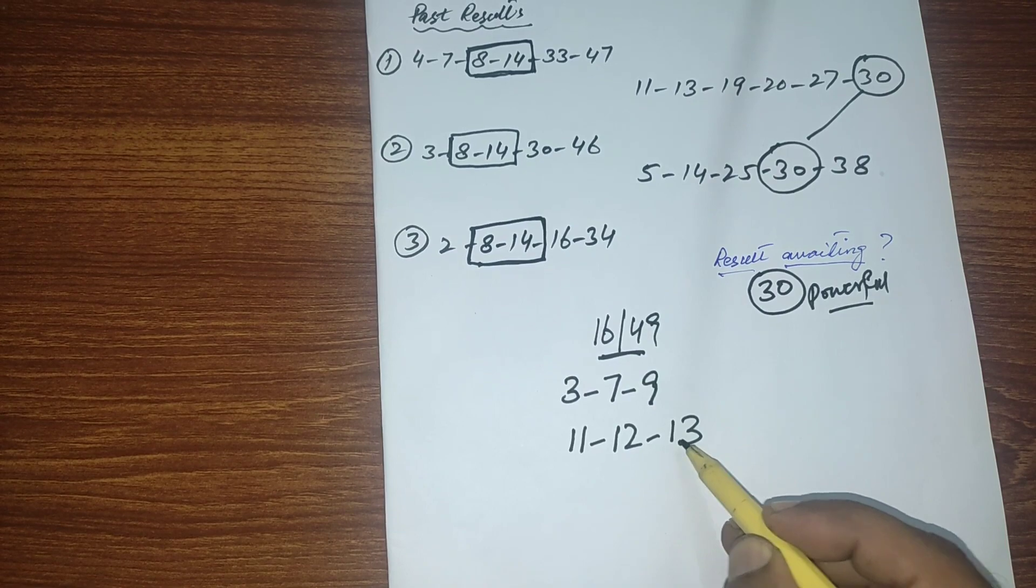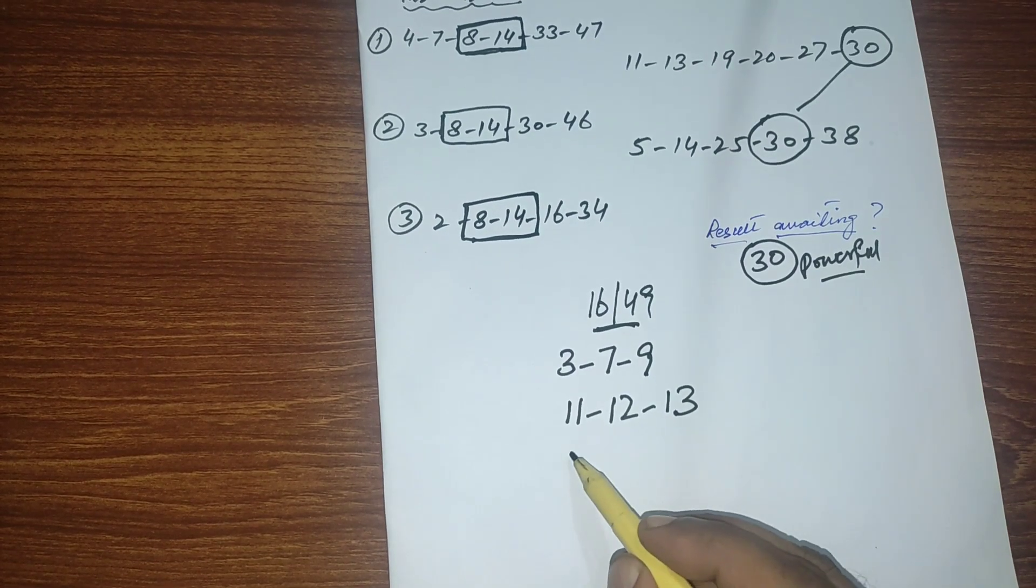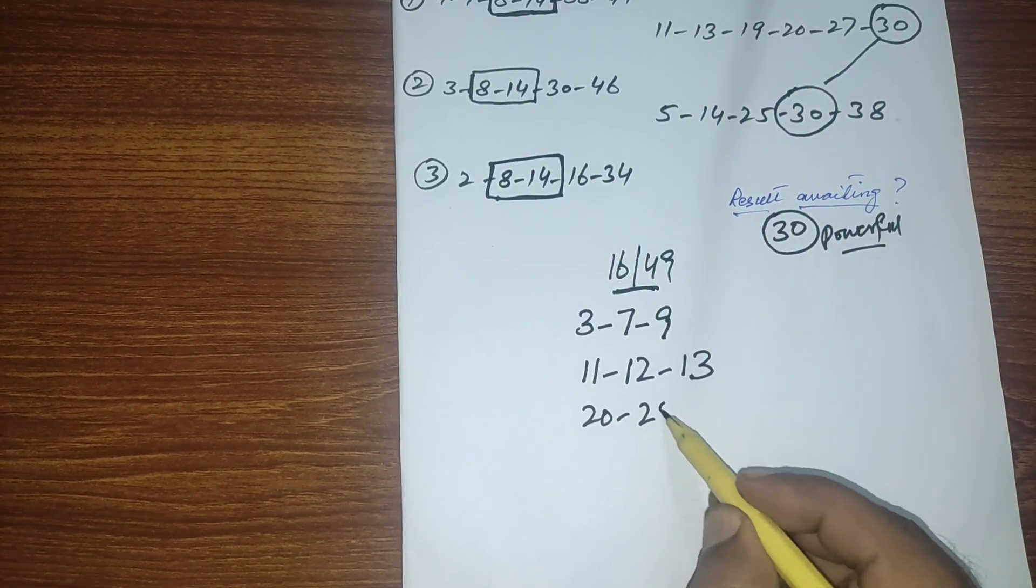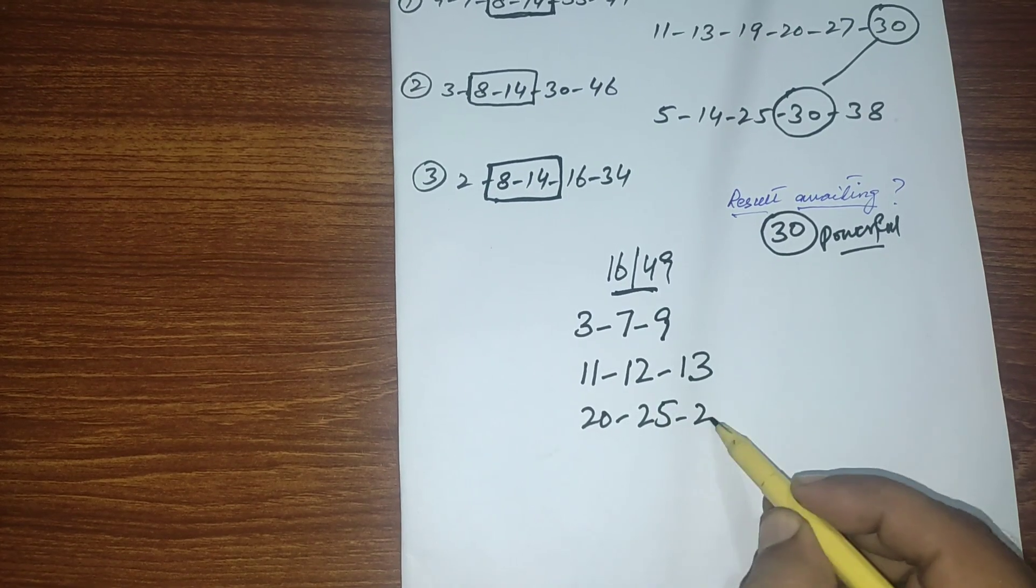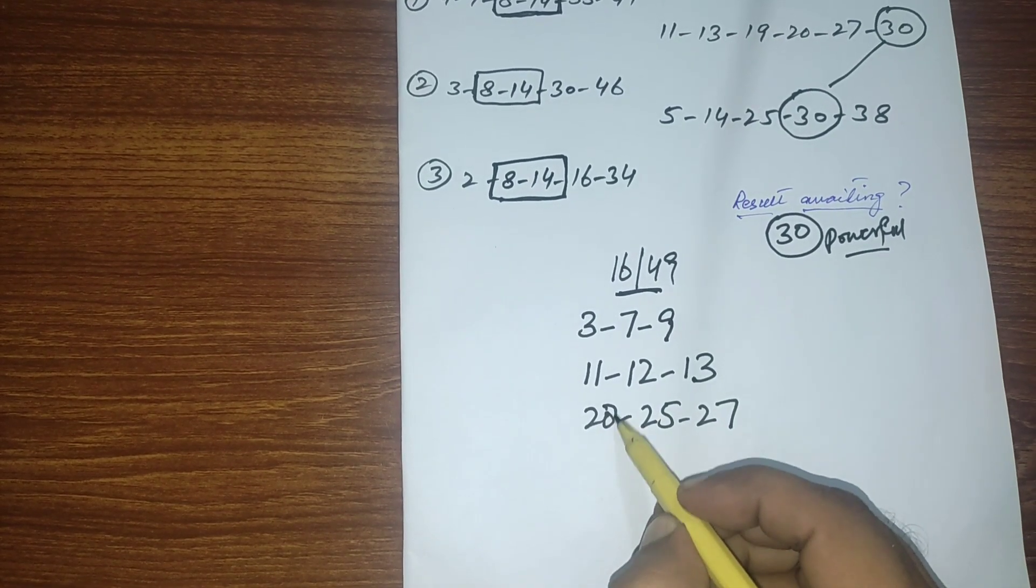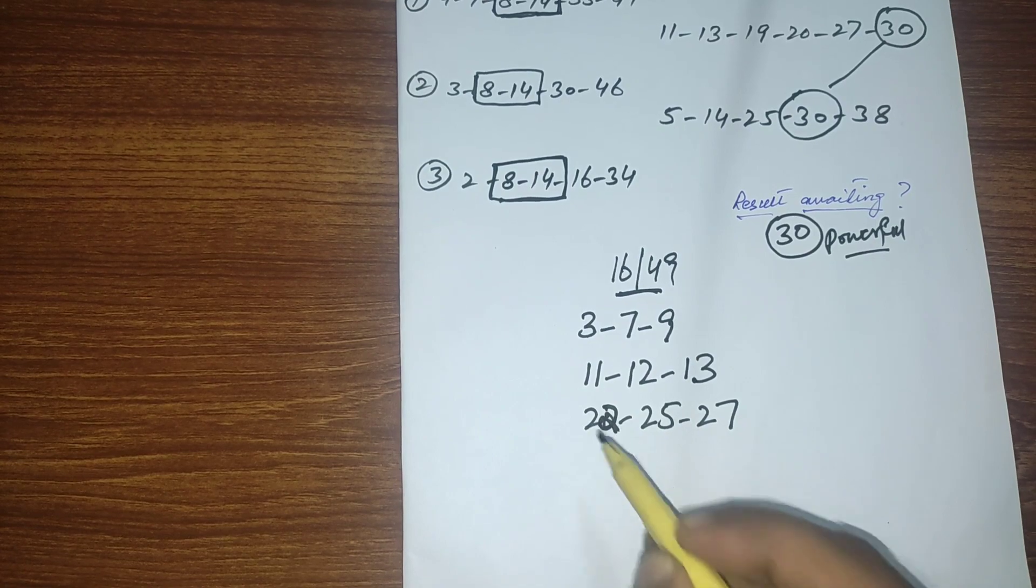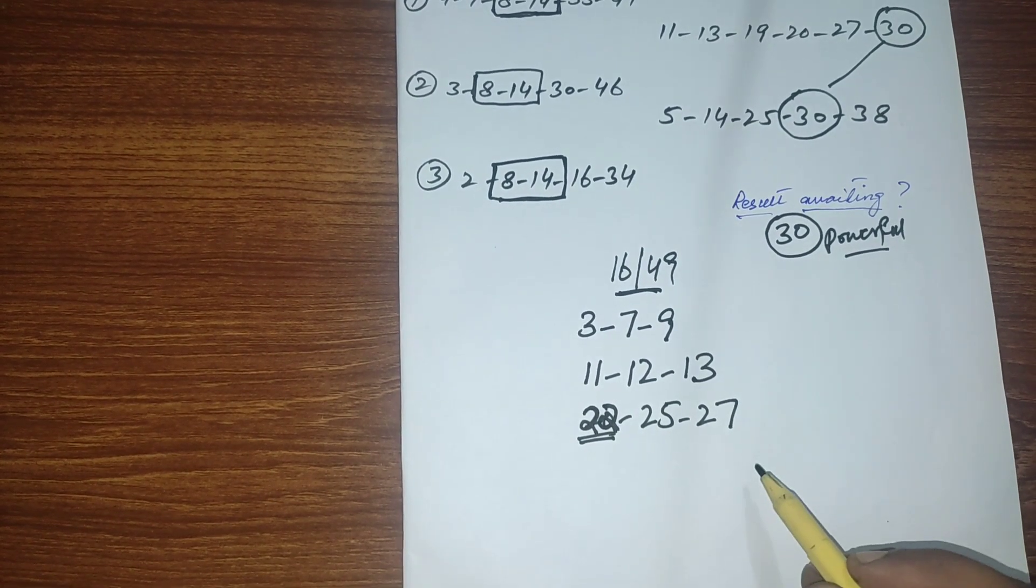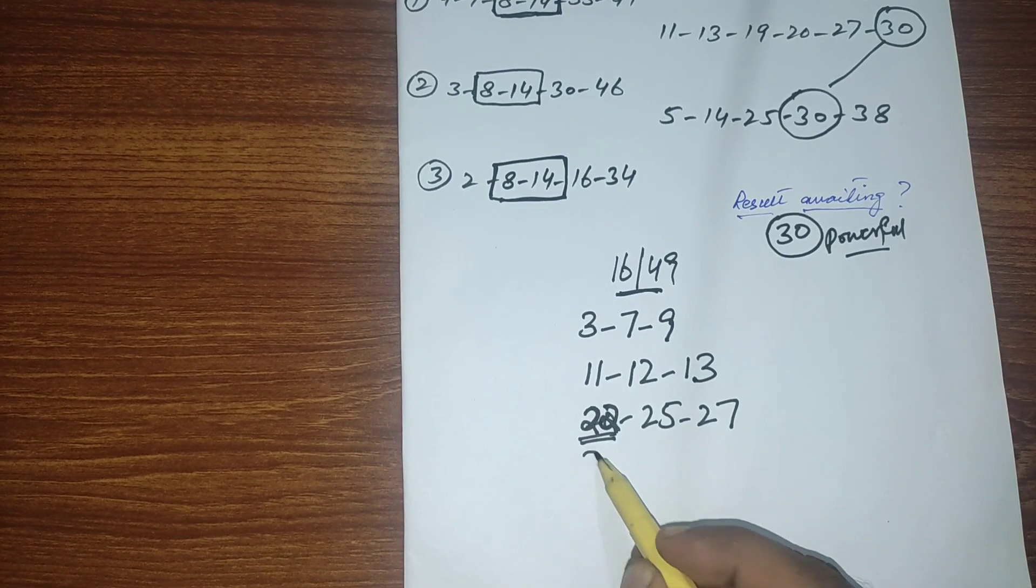From 20 to 29, 3 numbers: 20, 25 and 27. From 30 to 39 I have 4 numbers: 30, 33, 37 and 38.